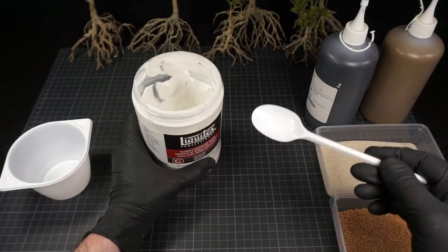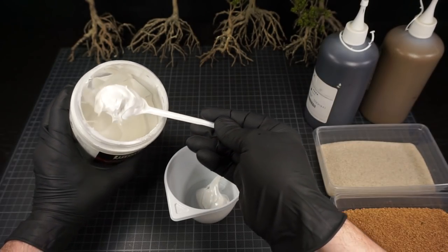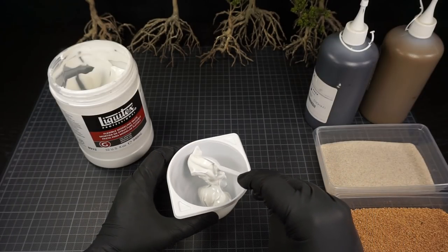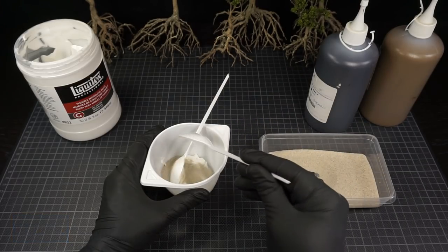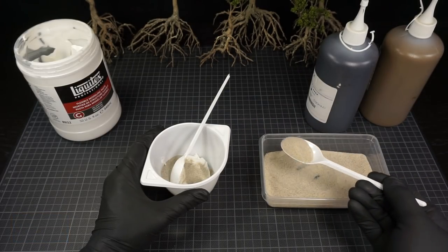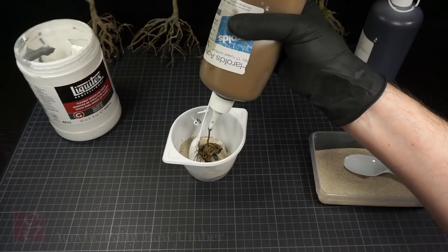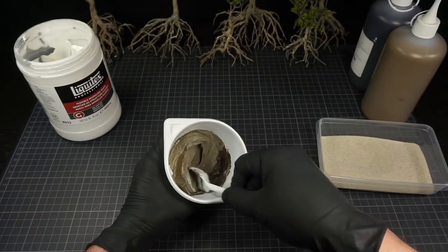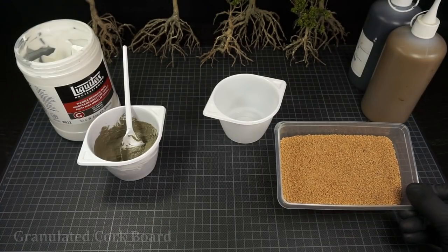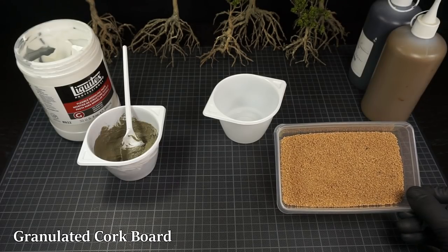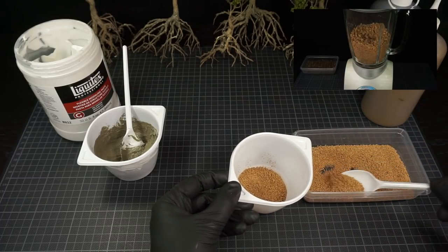With the trees made I then start making the ground cover. I'm combining some acrylic paste, sand and paint as the first part. Alongside this I make a second batch with some of this cork material added. This is basically some leftover cork board that I've ground in a blender.